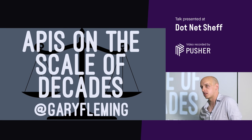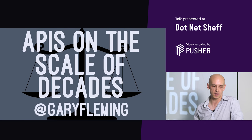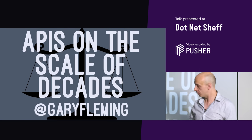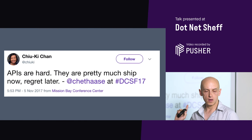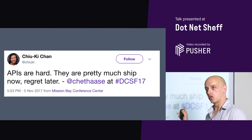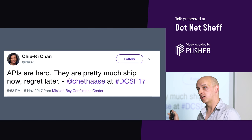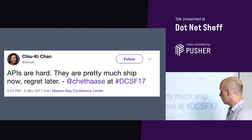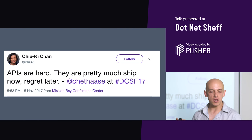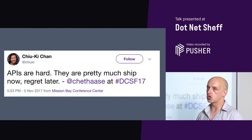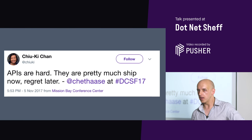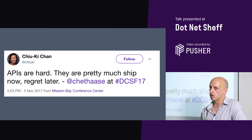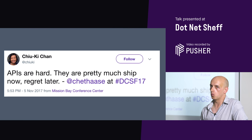This talk is called APIs at the Scale of Decades, by me, Gary Fleming. When I first started writing this talk, a tweet appeared that very night. It says: APIs are hard. They're pretty much ship now, regret later. I think that's often the case — when we put APIs in the world, we make mistakes.